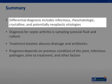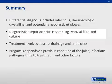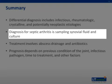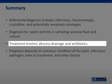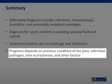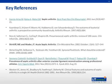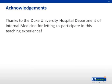In summary, the differential diagnosis for monoarticular arthropathy includes infectious, rheumatologic, crystalline, and potentially neoplastic etiologies. The best way to diagnose septic arthritis is by sampling synovial fluid and sending it for cell count, gram stain, and culture. Treatment involves abscess evacuation and antibiotics, which should be delivered as soon as septic arthritis is suspected, but preferably after cultures of synovial fluid and blood are obtained. Prognosis depends on previous condition of the joint, infectious pathogen, time to treatment, and other factors. Thank you for your attention.